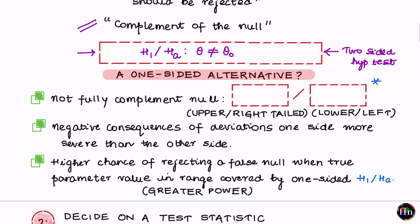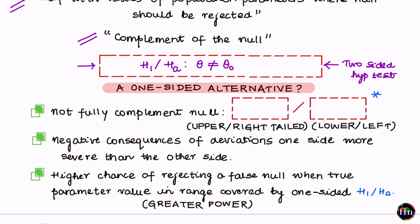Now consider one-sided alternate hypotheses. A one-sided alternate can be defined as Hₐ: θ > θ₀, which is called upper or right-tailed. Similarly, Hₐ: θ < θ₀ is called lower or left-tailed. Unlike two-sided, one-sided alternates do not always guarantee that either the null or the alternate covers every possible value of theta.